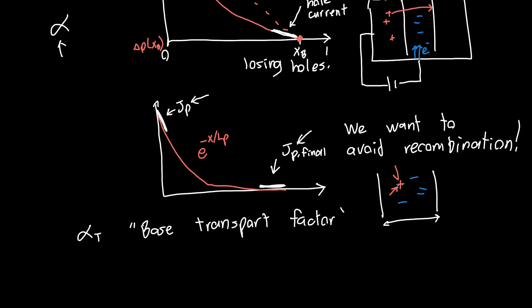And this will be the subject of the next one or two videos. We want to get an actual sense of how many holes are lost in this PNP device, or equivalently, how many electrons would be lost in the base of an NPN device. And this will be one component of our final efficiency alpha, which tells us how good of a transistor we have.